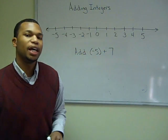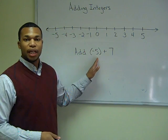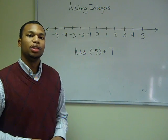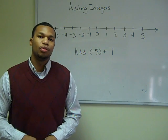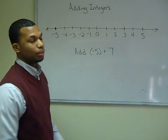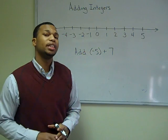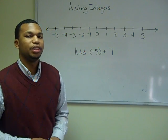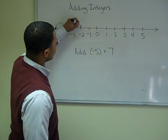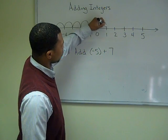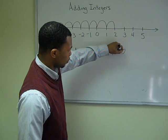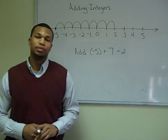Let's try another one. In this example, we're asked to take negative five and add positive seven to it. So our starting position is going to be on negative five. If we move seven places in the right direction, we end up with positive two.